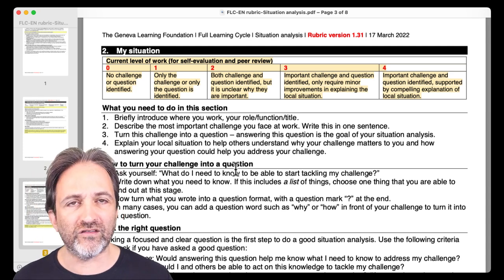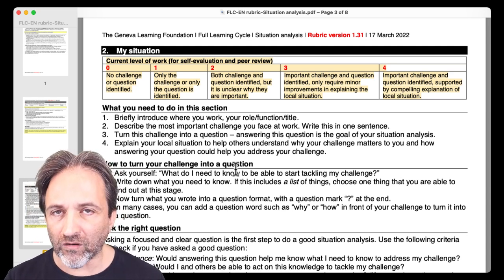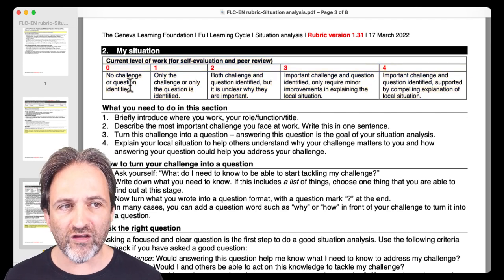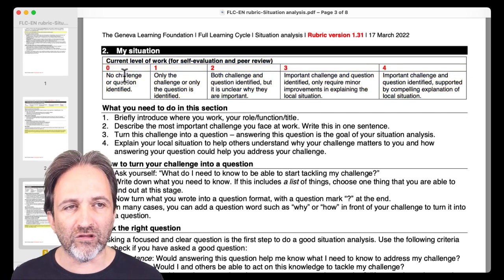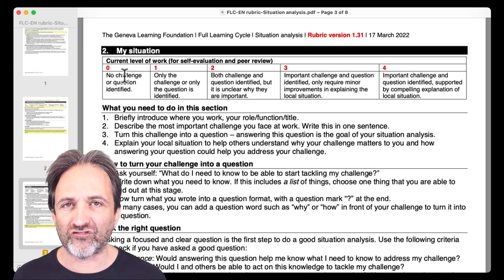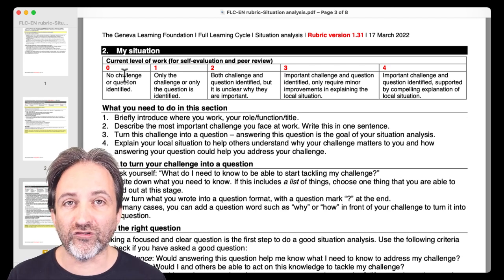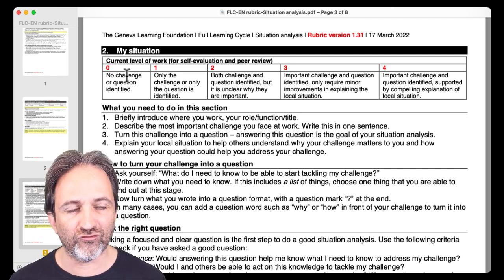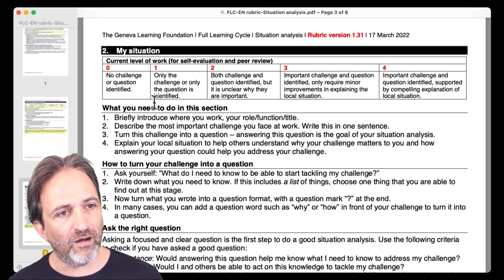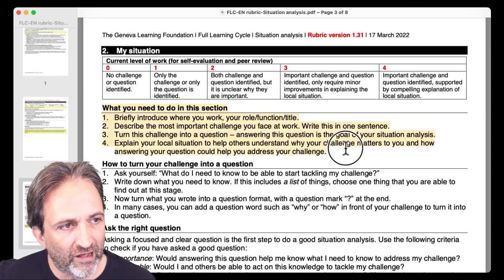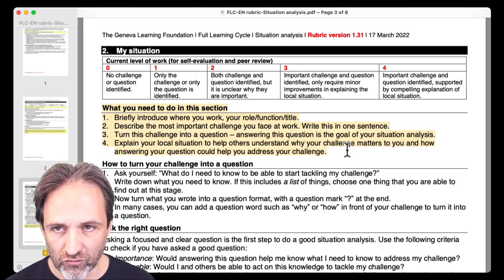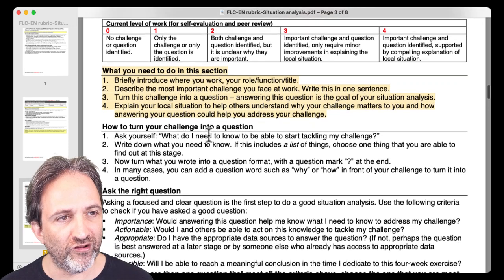So we see, in some cases, people just copying and pasting tons of information. That's not what we want. We want you to focus on what is it that you know and do not know about your situation that actually matters in relation to your challenge, in relation to the question that you want to answer. And what you don't know is almost, or maybe even more important in some cases than what you do know. So if you know that some of your data is not reliable, some of your data sources you question, they don't match what you observe in the field, that's very important information. We'll come back to that in the data sources around triangulation. But for now, let's go through now the rubric.